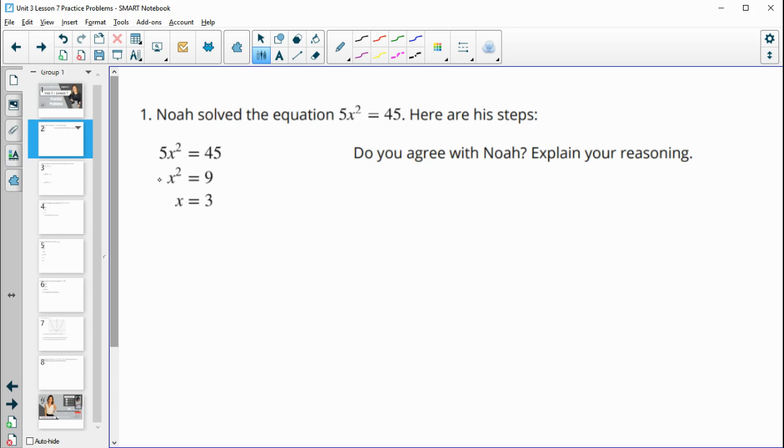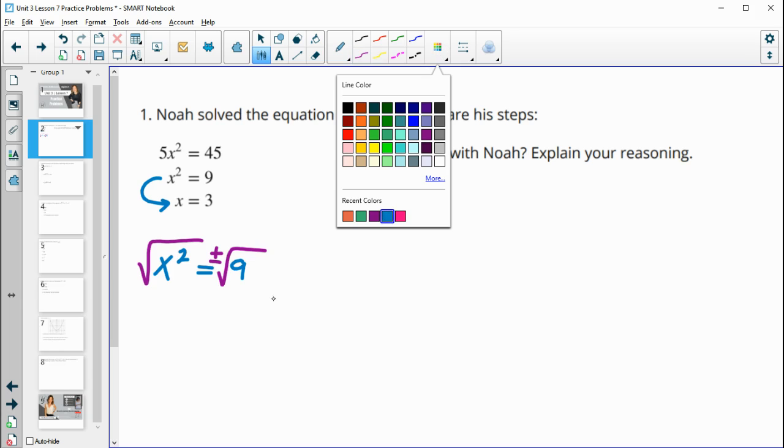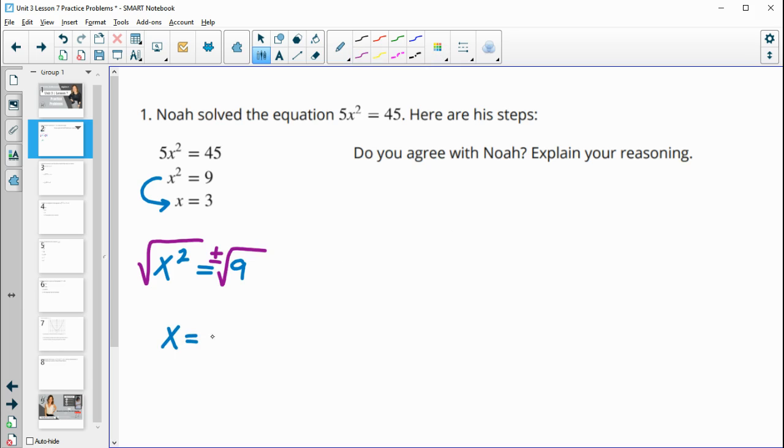However, when you go from this step to this step and you do the square root of x squared, remember that when you do the square root, there's a positive and a negative solution here because positive three squared is nine and negative three squared is nine. So the solutions to this are plus or minus square root of nine or plus or minus three. So we just missed the negative three there.